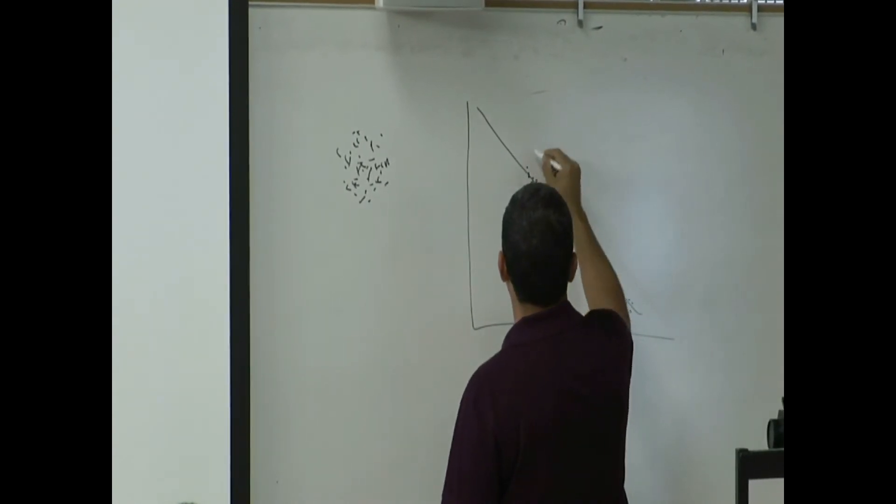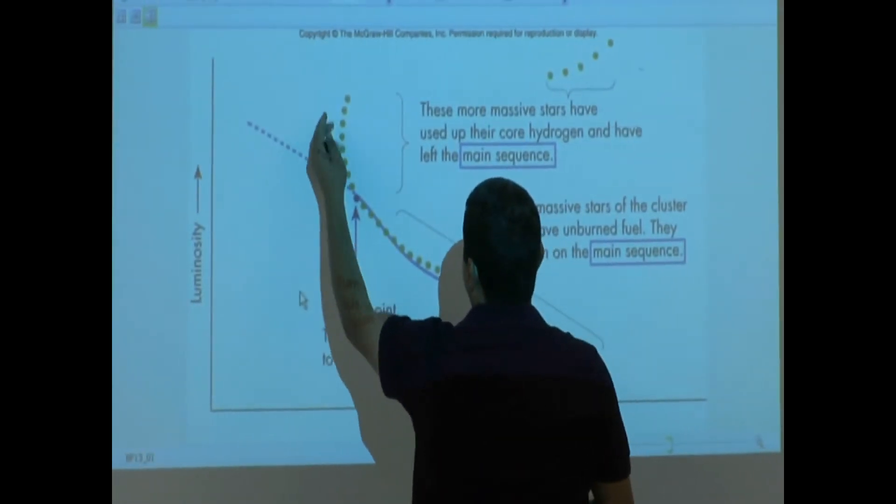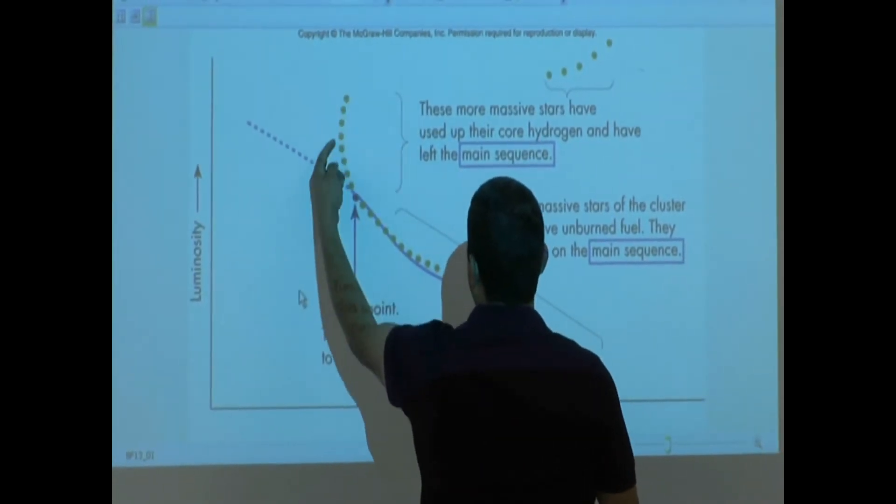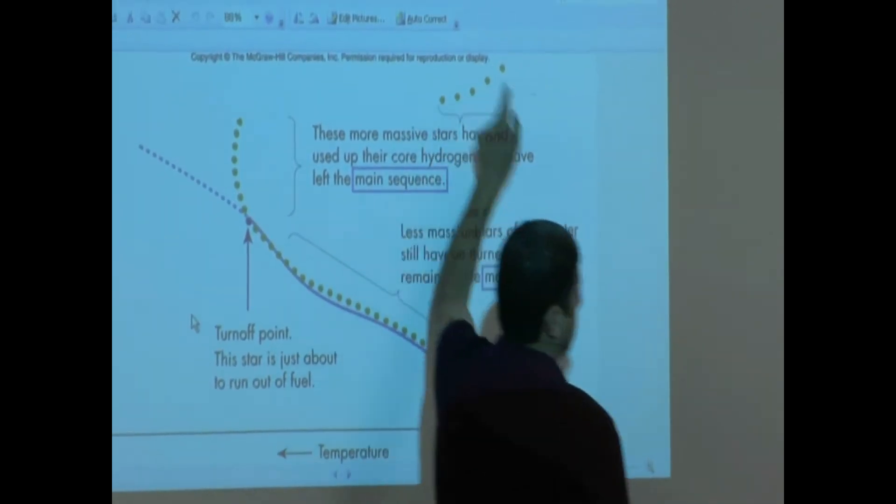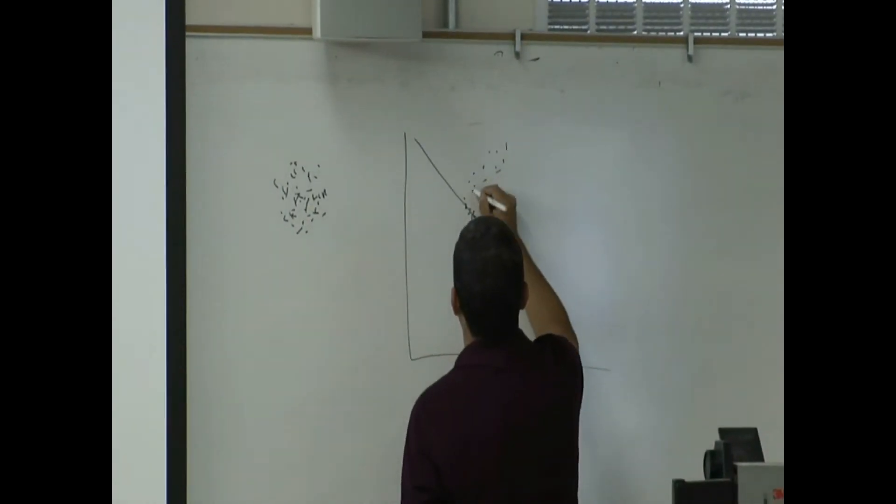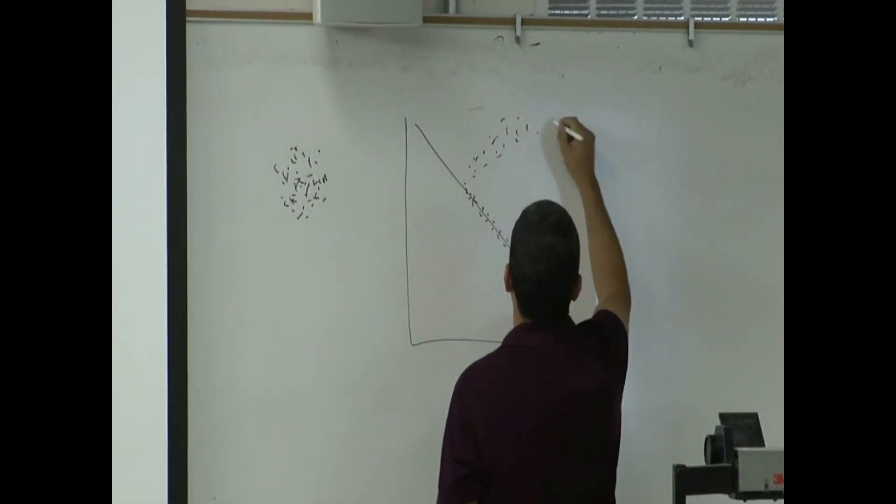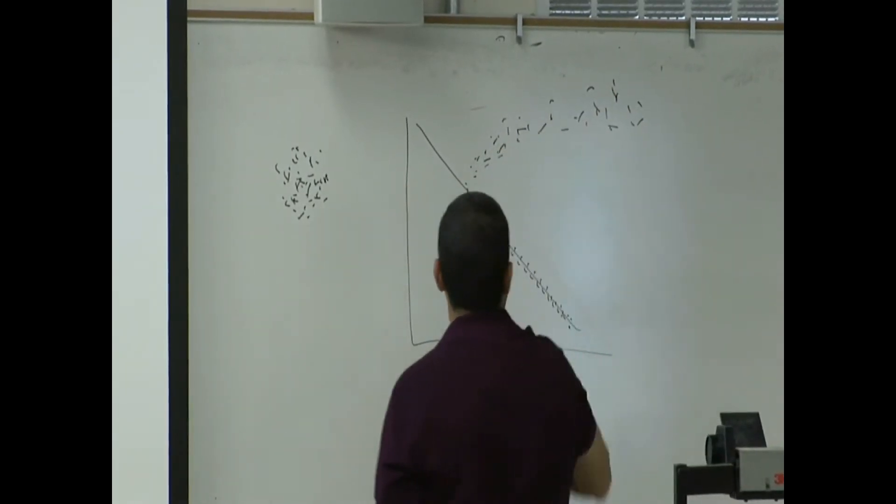And then they begin noticing, okay, there are some stars there that are starting to die, so they're super giants. And then there are ones that are really, really super giants. They're really large. So something like that. This gives you indication of how old that star cluster is. This point, they call it the turnoff point.